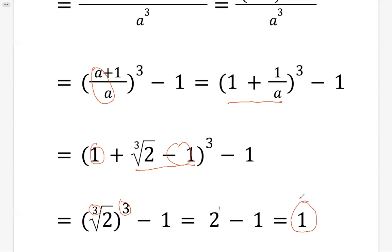So the original expression, 3 over A plus 3 over A squared plus 1 over A cubed, with the given condition in the end is equal to 1.